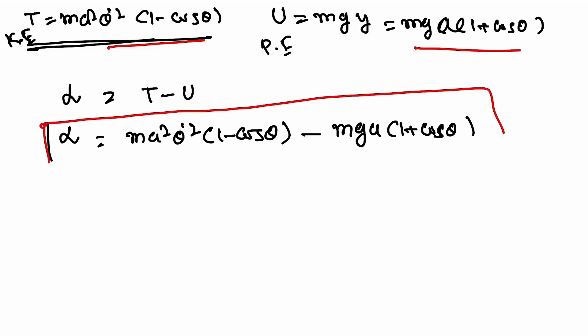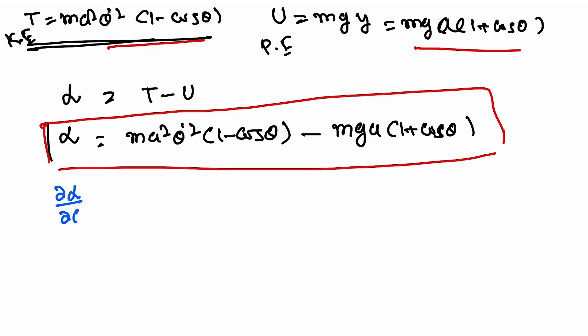Now we have to find the equation of motion of the particle. We will get it from the Euler-Lagrange equation: ∂L/∂θ - d/dt(∂L/∂θ̇) = 0.